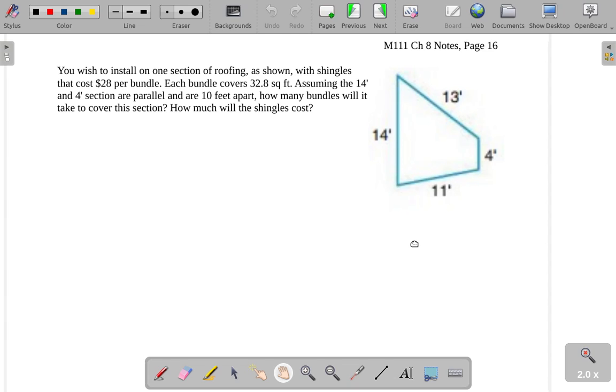If you wish to install one section of roofing as shown with shingles that cost $28 per bundle.